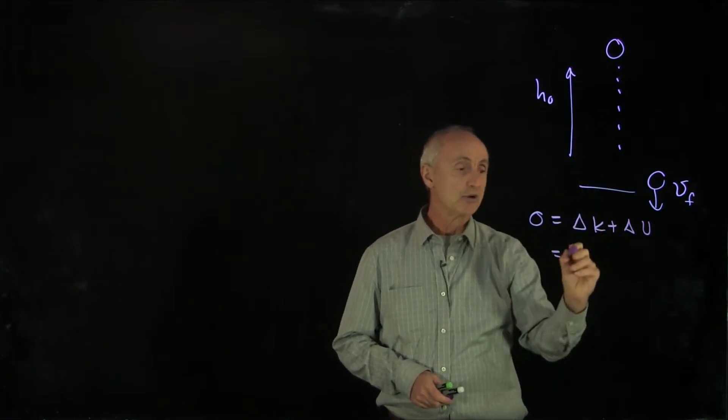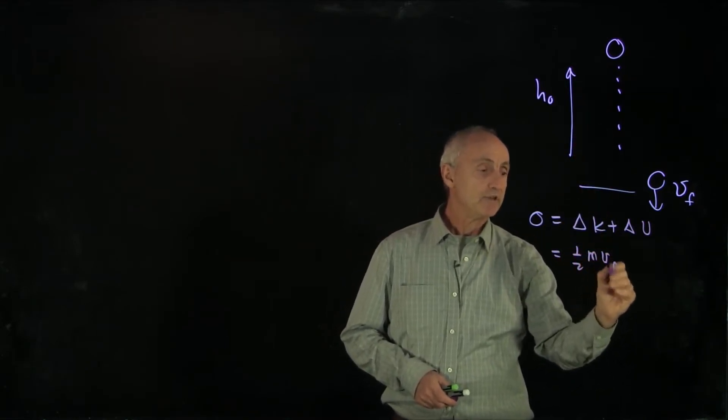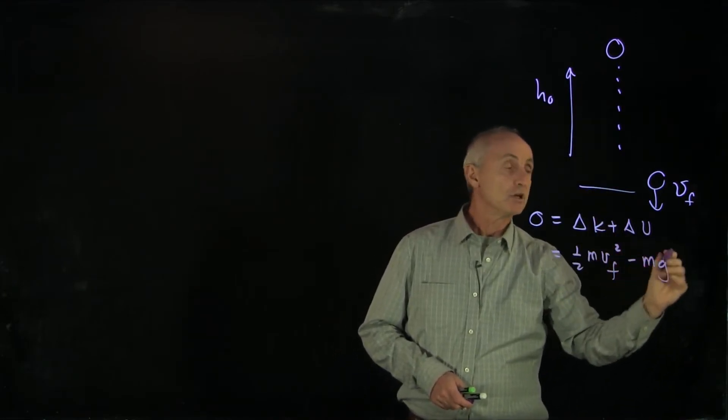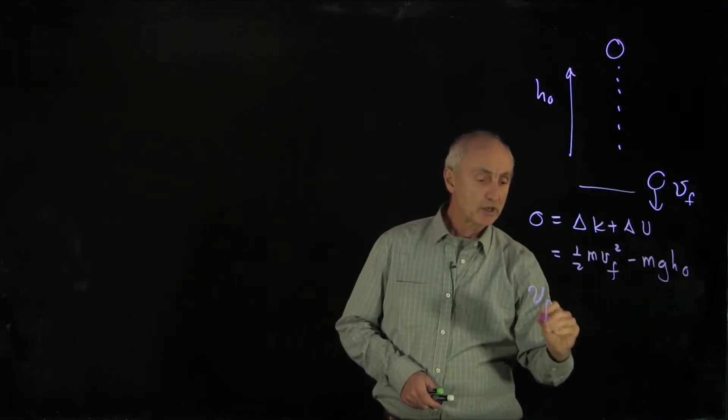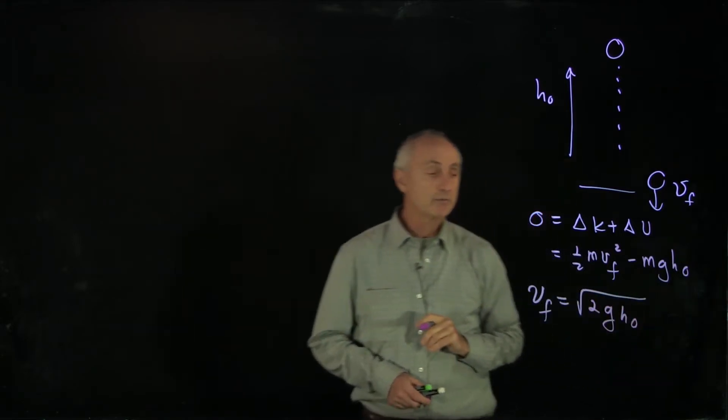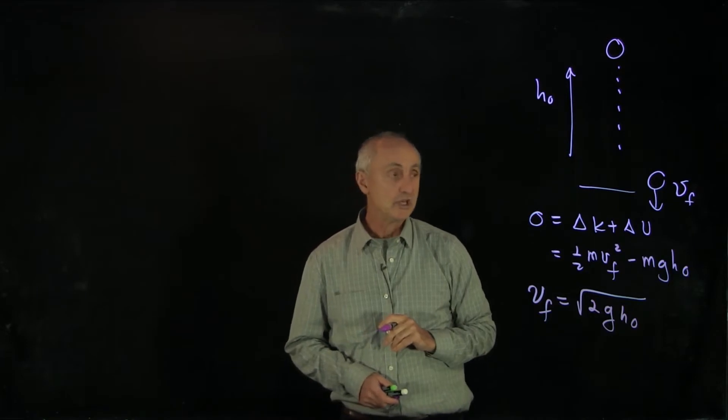We saw that the kinetic energy changed by 1 half mv squared, and the potential energy changed by minus mgh0. So we can compute the velocity of the object as it's falling, given by square root of 2gh0.